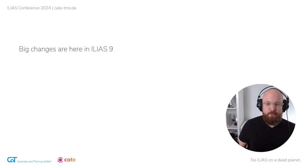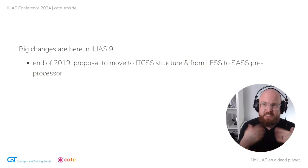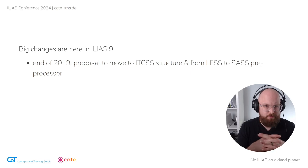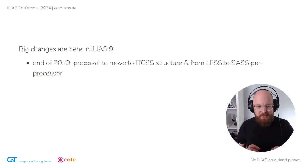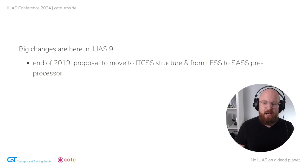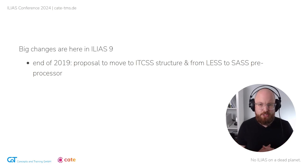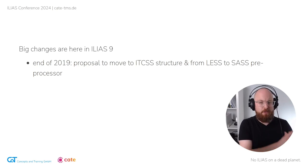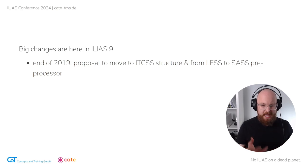In ILIAS 9, there were some big changes to the way the style code works. At the end of 2019, there was a proposal to restructure the code. The old code of Delos was pretty much one long file — a little bit of code up there and then further down somebody would have put some code there. The structure could be improved. At that time, we also considered switching the preprocessor. We don't immediately write CSS code, which is the style code that changes how HTML looks, but we use another language before that — SCSS — which allows setting color variables, nesting, and functions that you can't do in CSS.